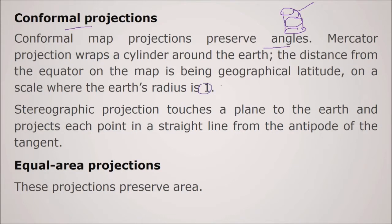So stereographic projection touches a plane to the earth and projects each point in a straight line from the antipode of the tangent. And we also have equal area projections, these projections preserve area.